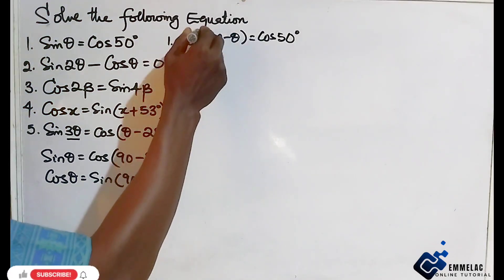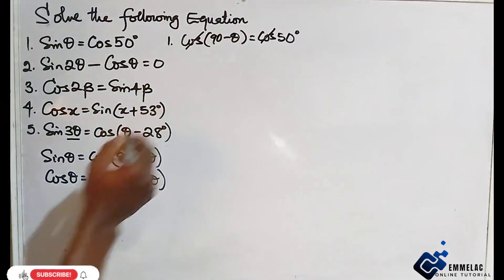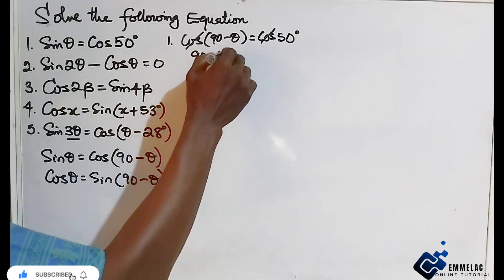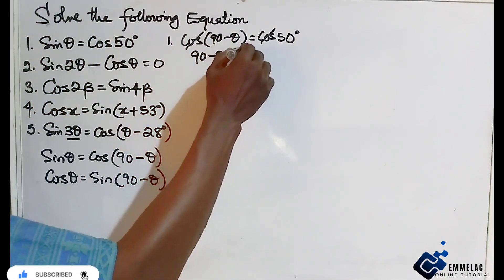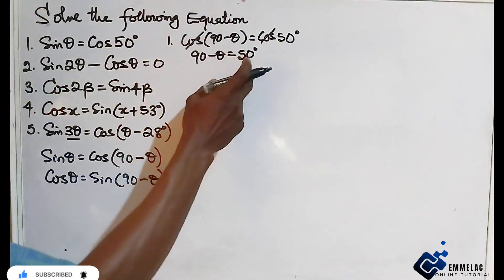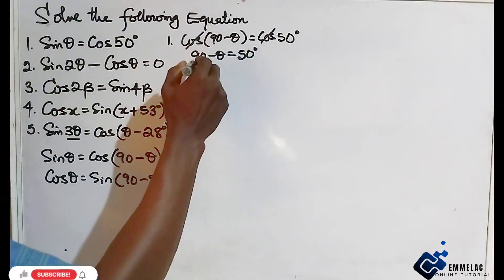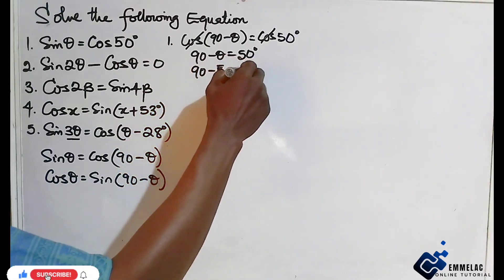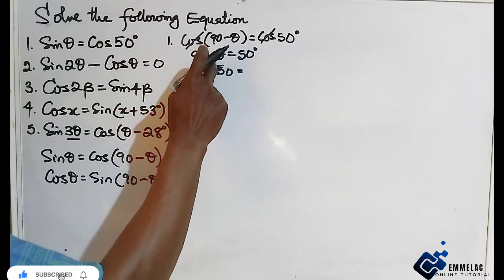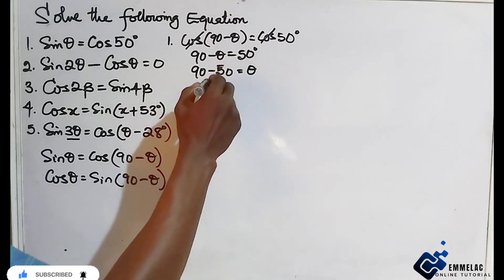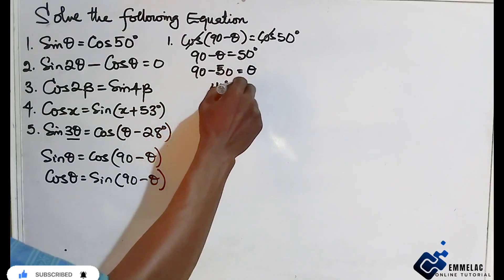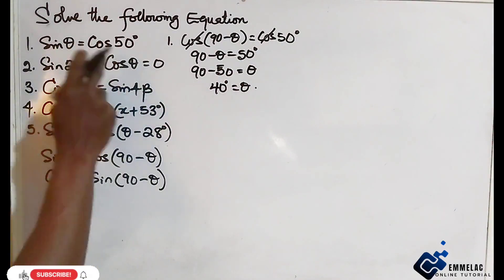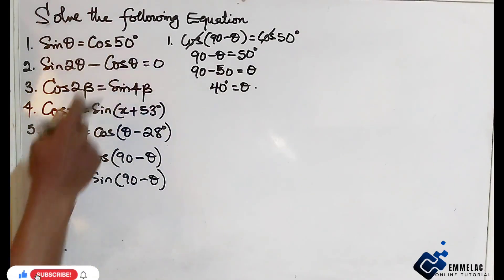Having this, we eliminate the cos and equate the two angles together. So 90 minus theta equals 50 degrees. Collecting like terms, 90 minus 50 equals theta, which gives us theta equals 40 degrees. This means sine 40 degrees gives the same value as cos 50 degrees.